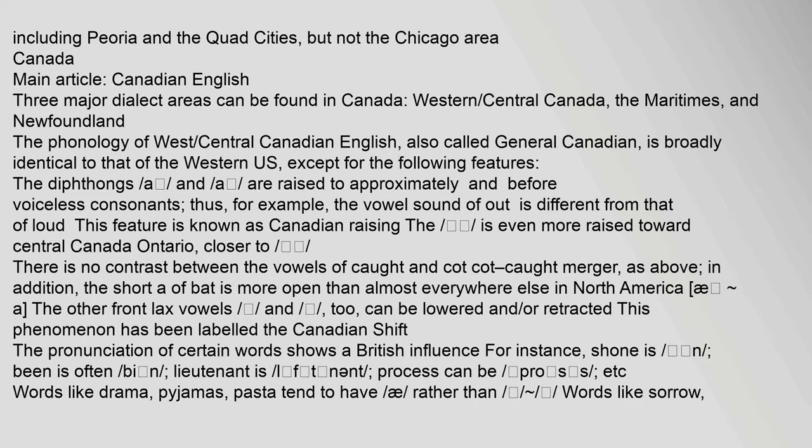Three major dialect areas can be found in Canada: western, central Canada (the Maritimes), and Newfoundland. The phonology of West and Central Canadian English, also called General Canadian, is broadly identical to that of the western US, except for certain features. The diphthongs are raised before voiceless consonants — this feature is known as Canadian Raising. There is no contrast between the vowels of 'caught' and 'cot' (caught-cot merger). The short 'a' of 'bat' is more open than almost everywhere else in North America, and other front lax vowels can be lowered or retracted, a phenomenon labelled the Canadian Shift.